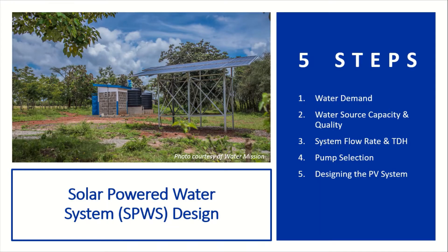There are five basic steps to solar-powered water system design. The first step is water demand. The second step is water source capacity and quality. The third step is system flow rate and total dynamic head. The fourth step is pump selection. And finally, the fifth step is designing the photovoltaic system.